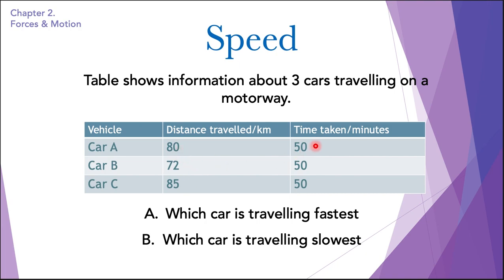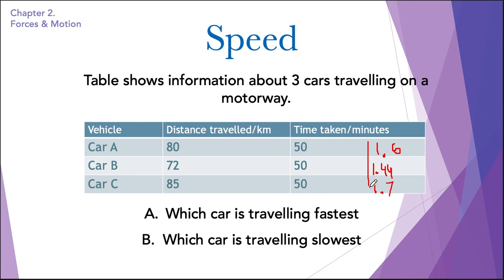80 divided by 50 gives 1.6, so the speed of car A is 1.6 meters per second. 72 divided by 50 gives 1.44 meters per second for car B. 85 divided by 50 is 1.7 meters per second for car C. So car C is traveling the fastest and car B is traveling the slowest. We use this equation, divide distance by time, and find the speed of each car.